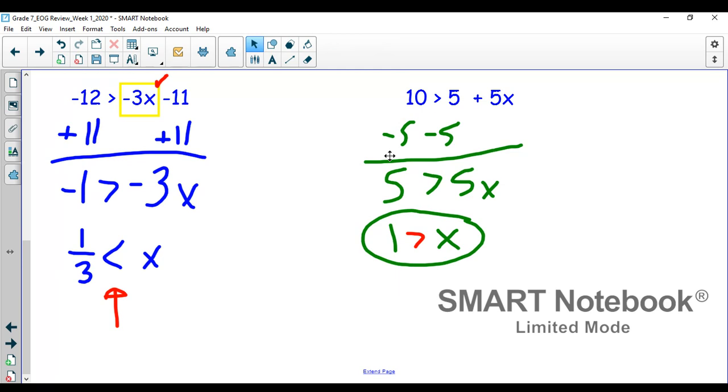Okay, so in this problem, the first thing we did is we took five away from each side of the inequality. 10 minus five is five. These fives canceled out. So we're left with 5x. So five is greater than 5x divided by five, one is greater than x. We did not need to change the inequality sign because our coefficient was positive.